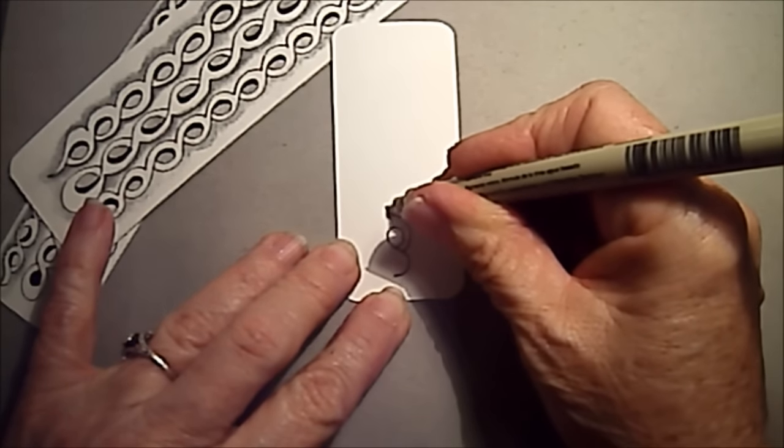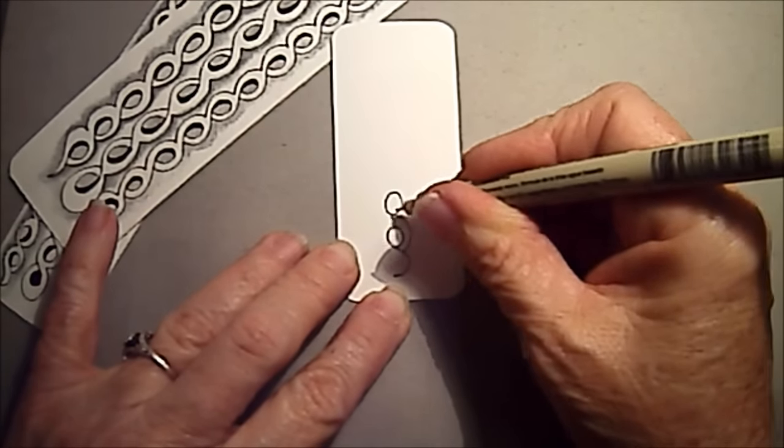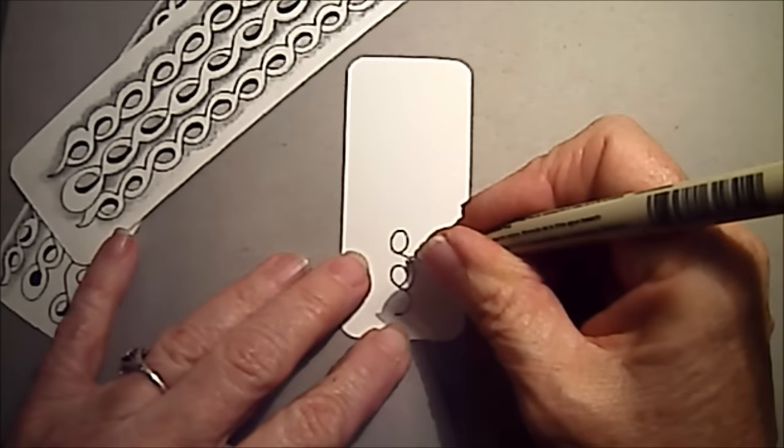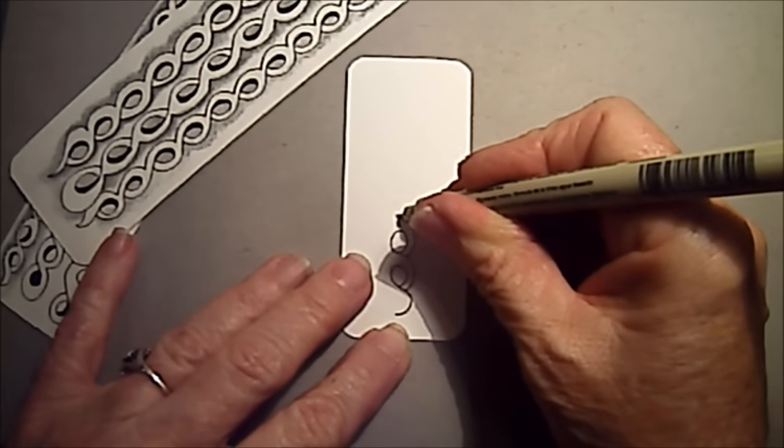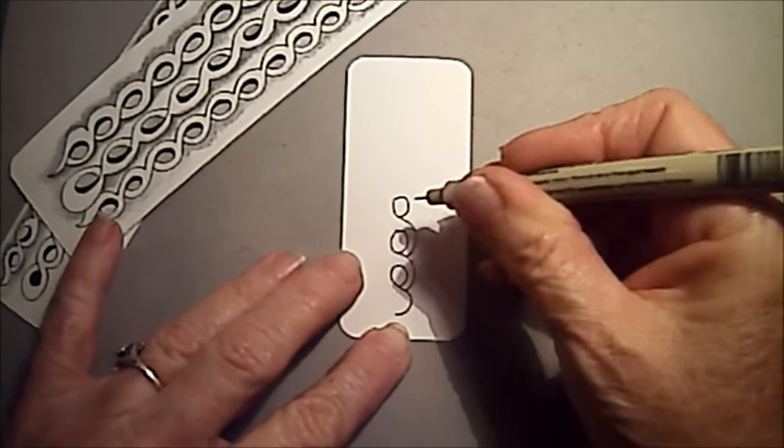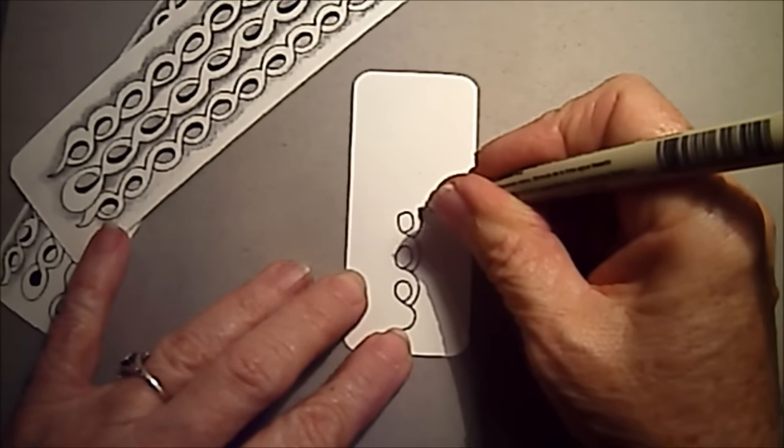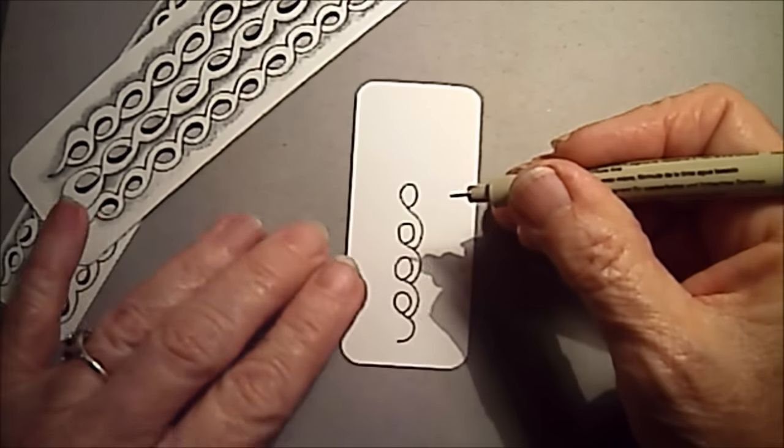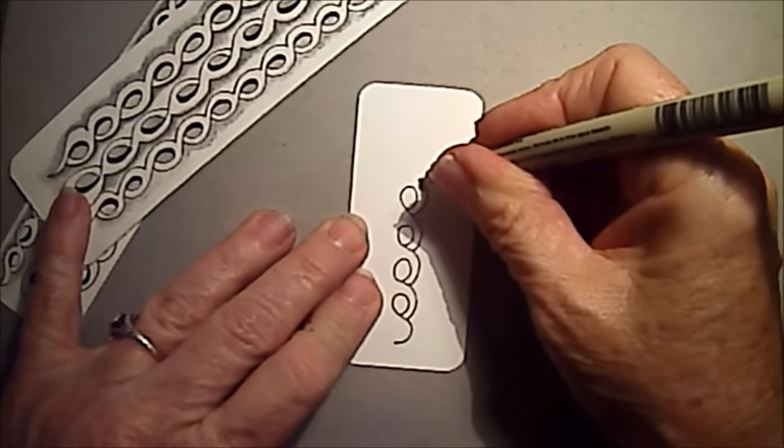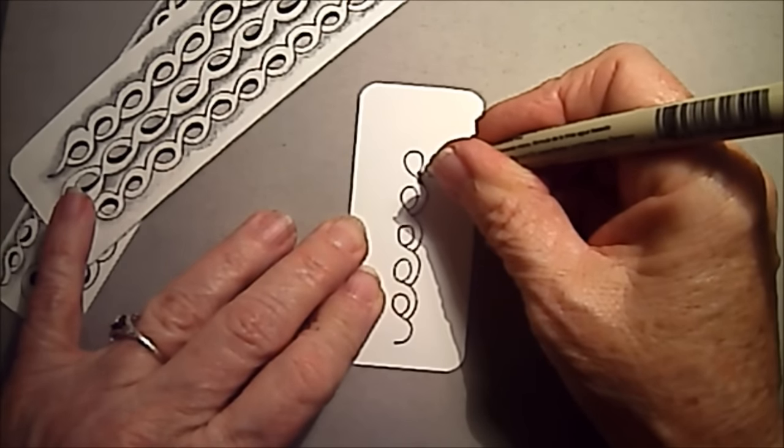We come and do another one, and we stop right there. So you can see that figure eight, it's half of a figure eight. And we stop, and this is a great border tangle.